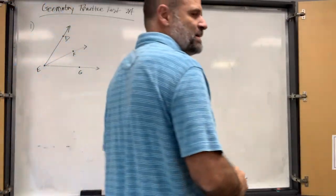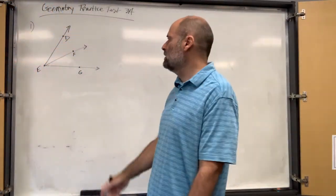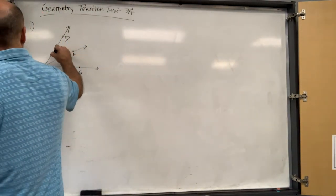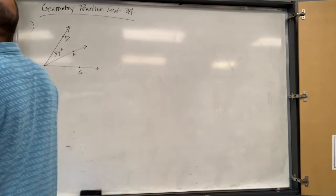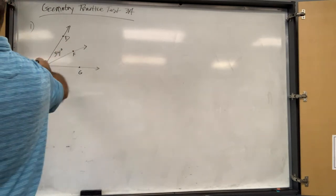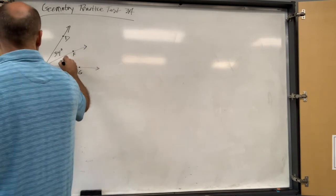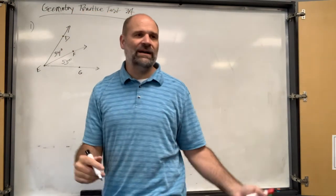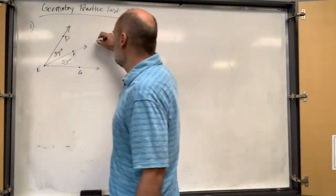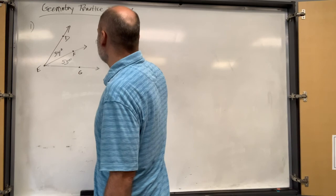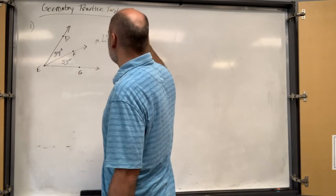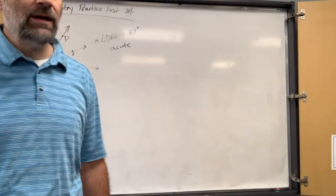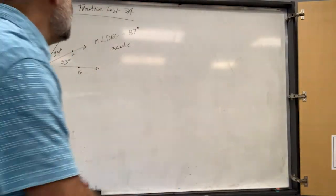Okay, test practice 3A, here's number one. It says DEF is 34 degrees. So the measure of DEG equals 34 plus 50, which is 87 degrees.